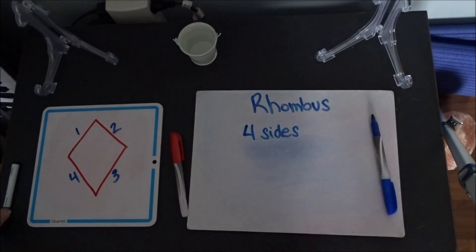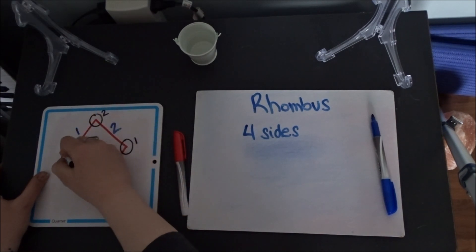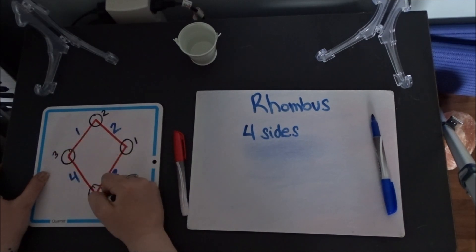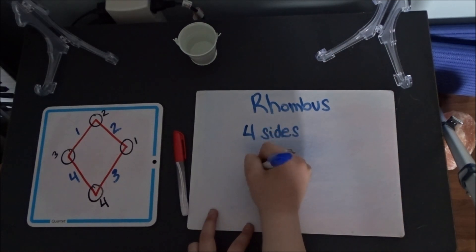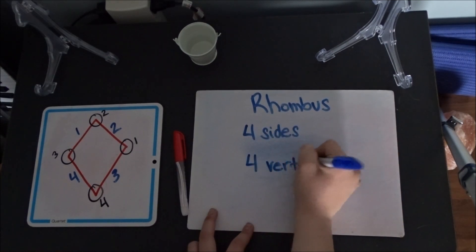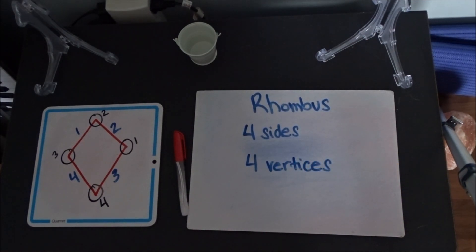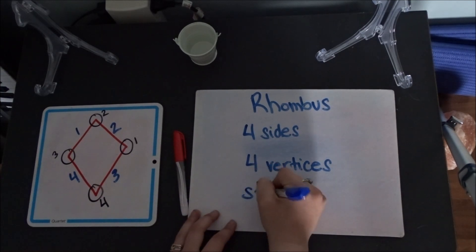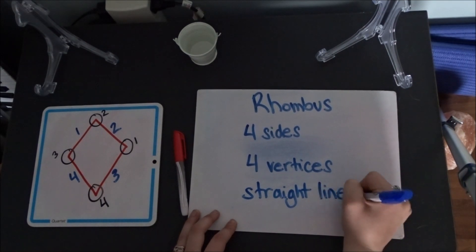How many vertices does our rhombus have — how many corners? One, two, three, and four — four vertices. And are we using straight lines or curved lines? You are right, we are using straight lines.